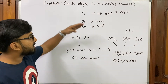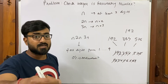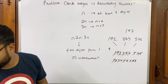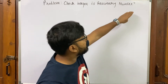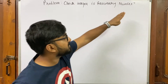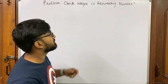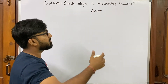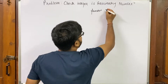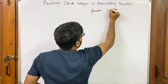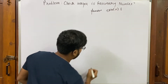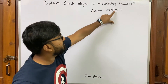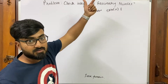I hope the explanation about fascinating numbers is clear. There is also a link in the description that describes what a fascinating number is. Let's try to solve this problem now. I will write a method — let's call it isFascinatingNumber — that takes an integer n and returns true if it is a fascinating number, otherwise it returns false.